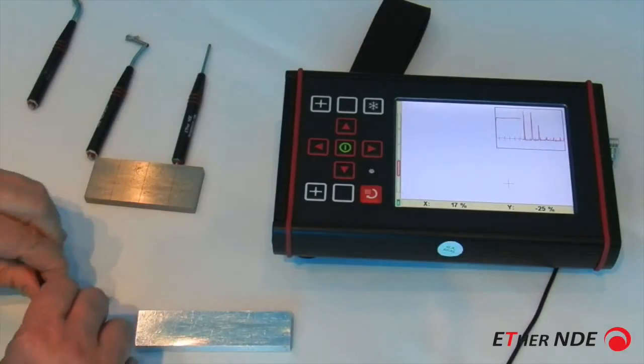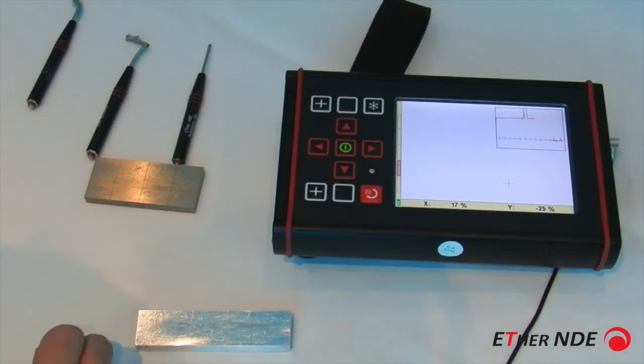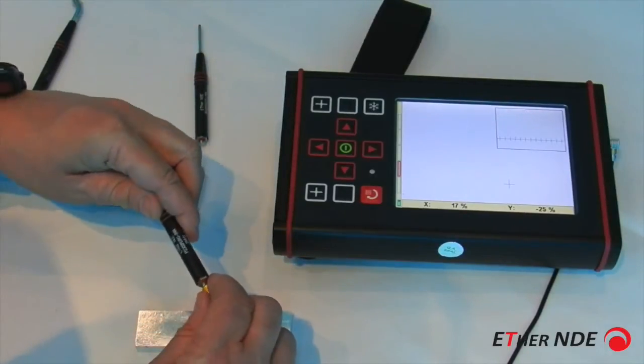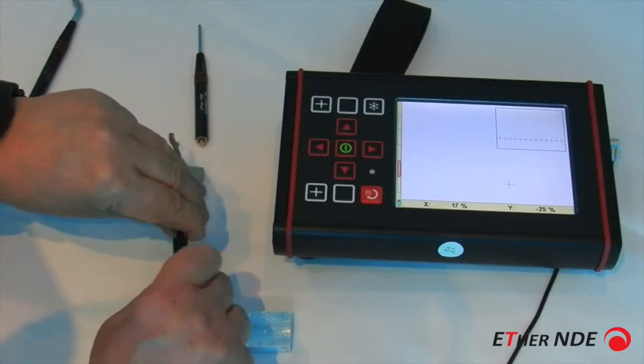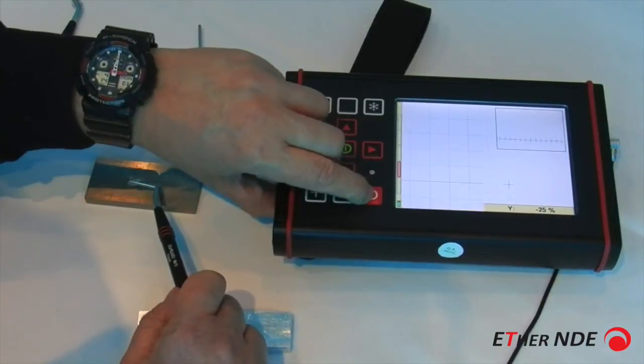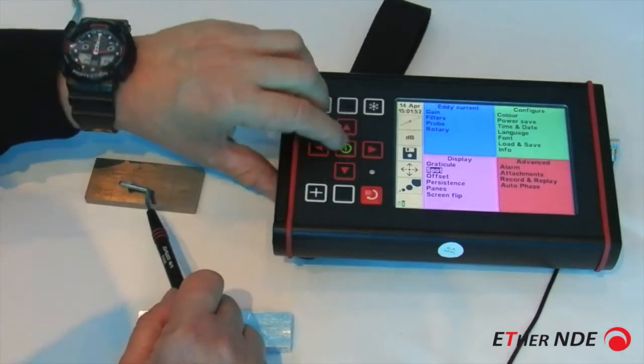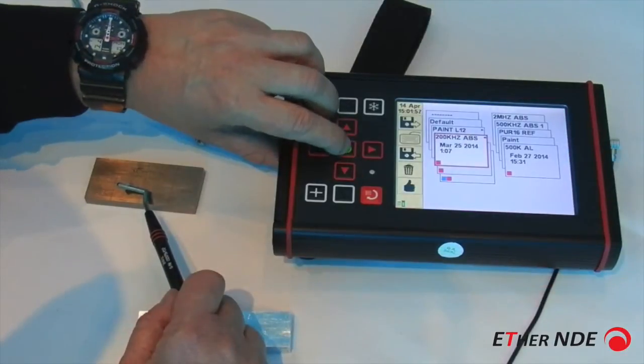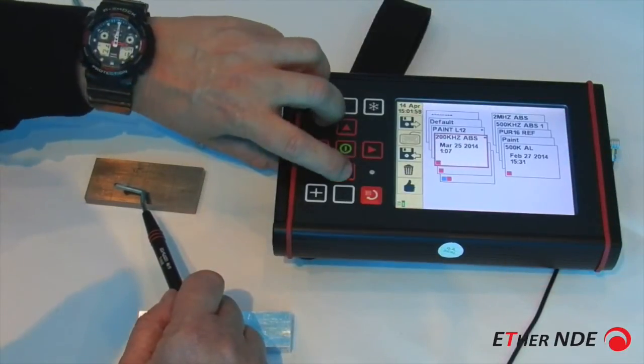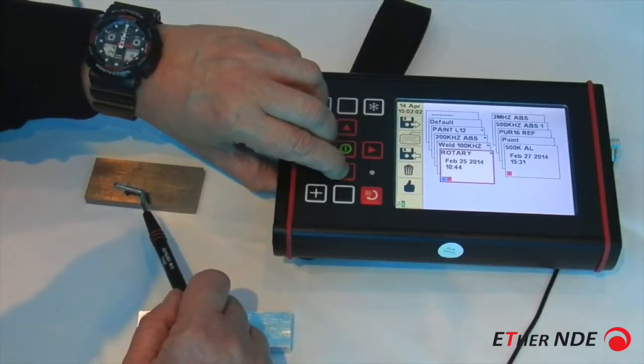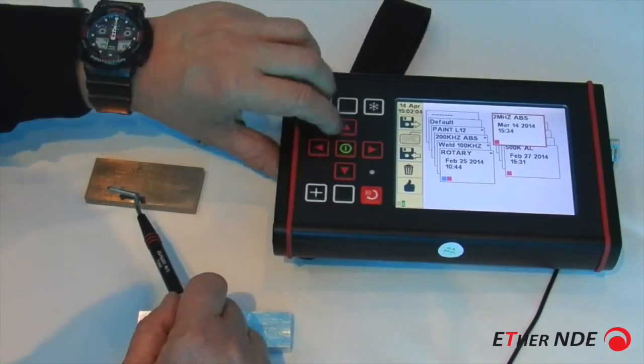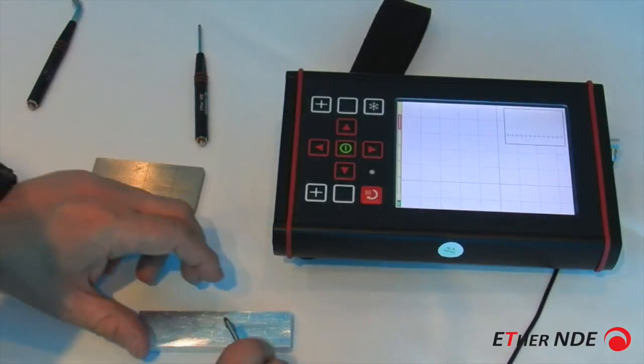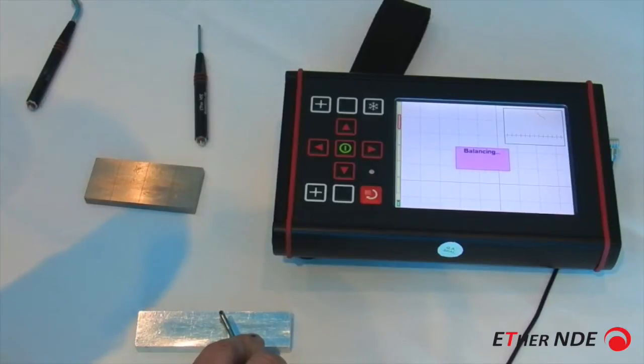If I now change using 2 MHz probe, on aluminium, pick up 2 MHz probe, go into, leave there, go into the menu, go and go load and save, and there should be a 2 MHz setting in here, by default, so let's go over there, recall 2 MHz, and hit balance,